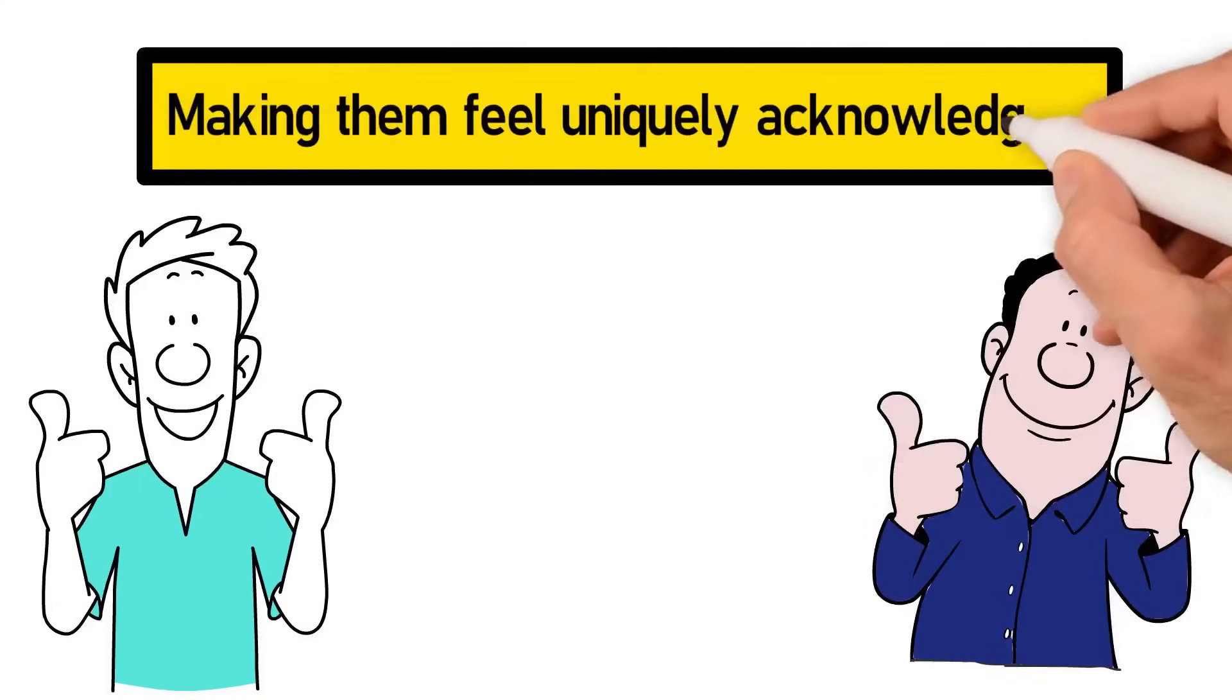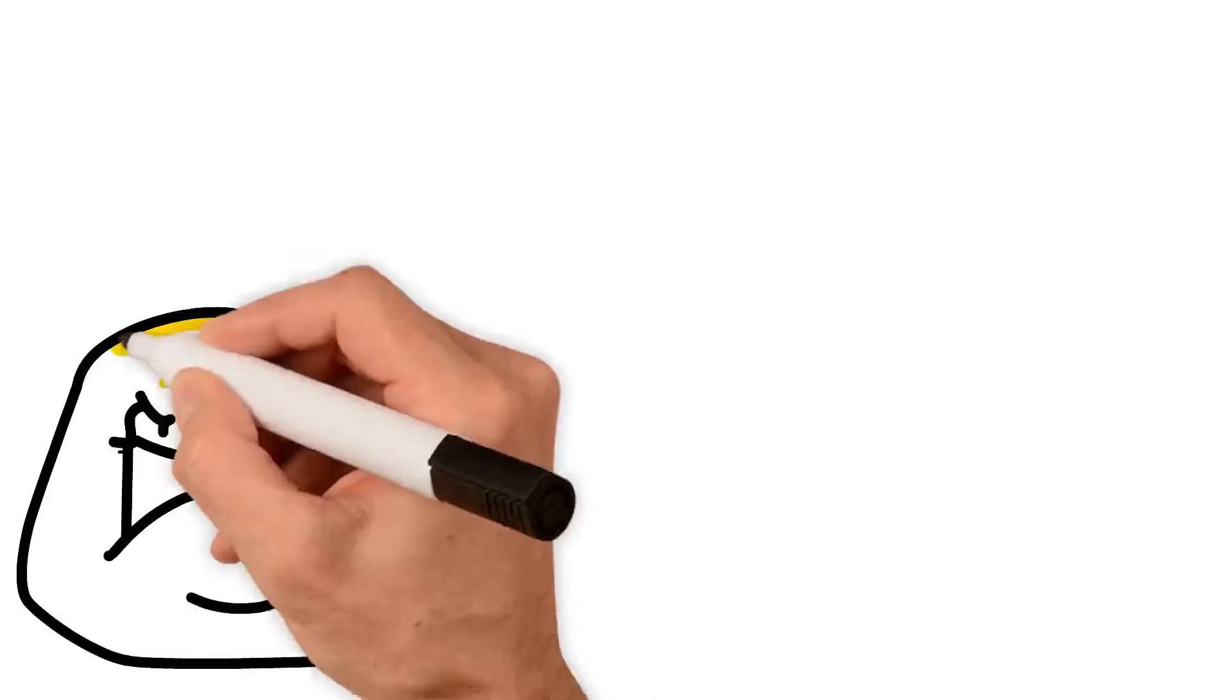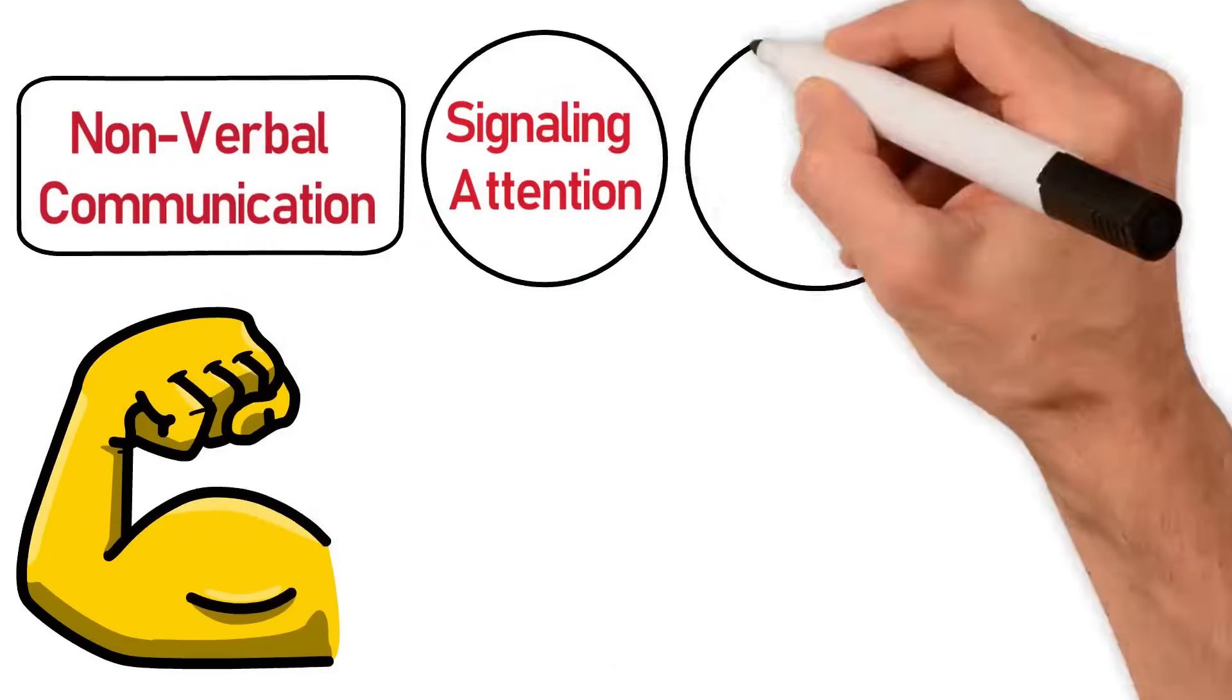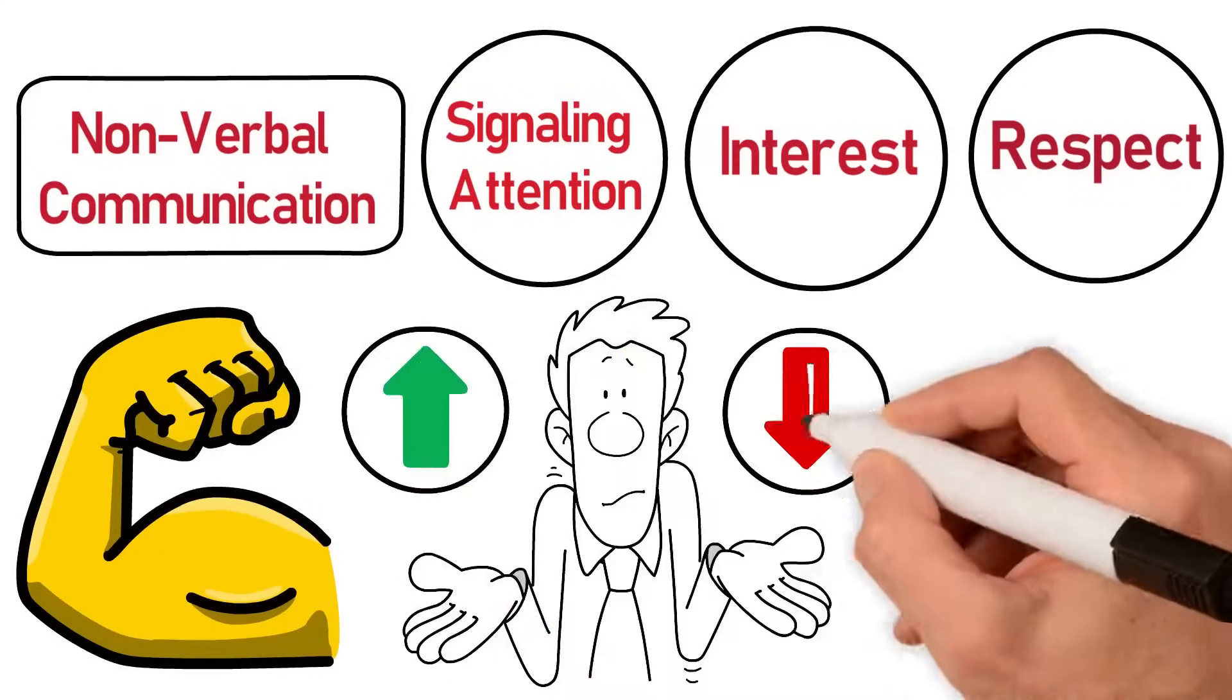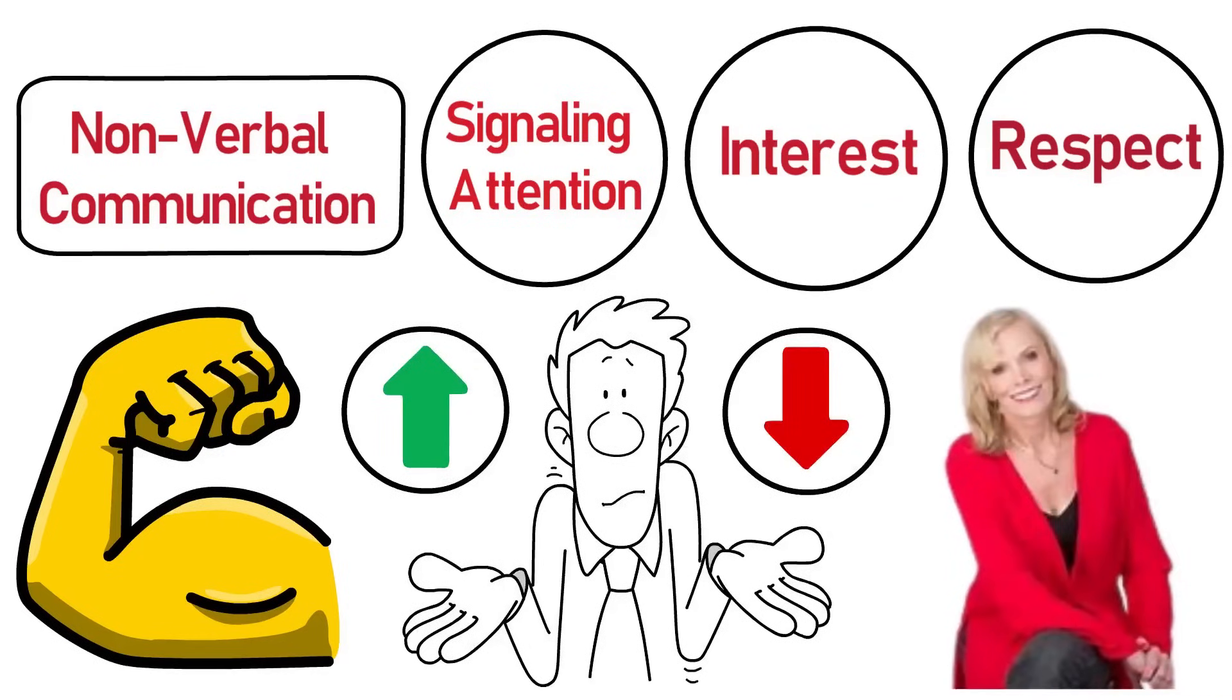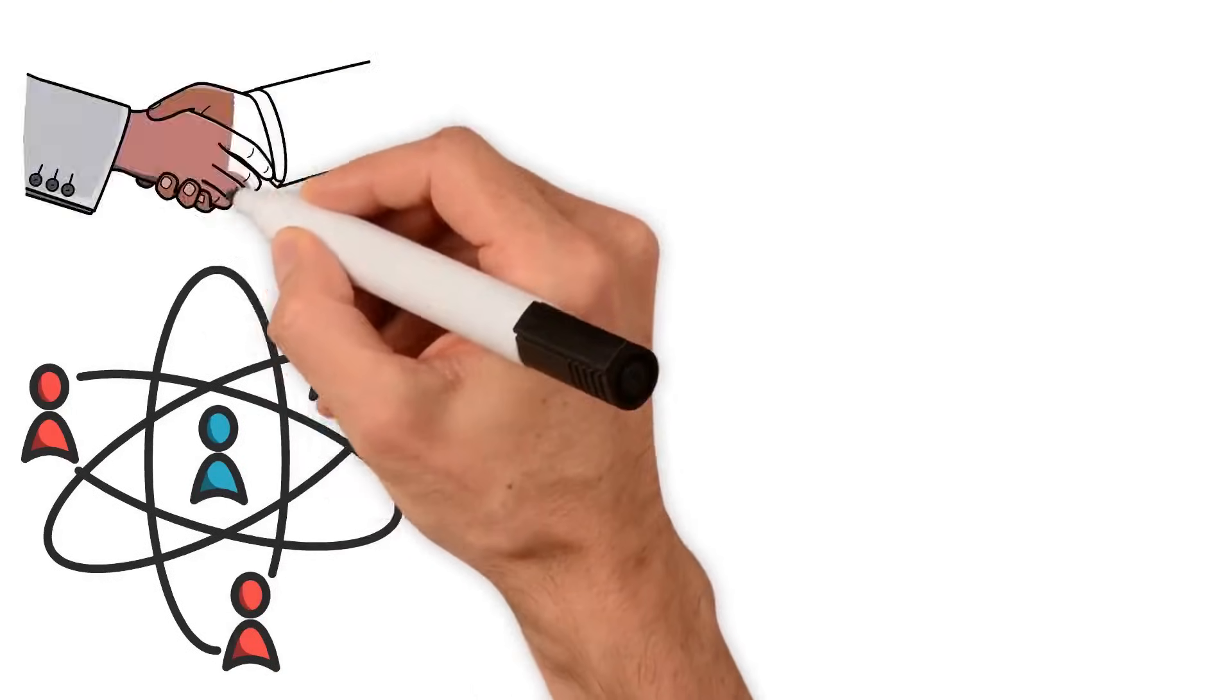Eye contact is another vital tool in our first impression toolkit. It's a powerful form of nonverbal communication, signaling attention, interest, and respect. But there's a fine balance to be struck. Too little can seem evasive. Too much can feel confrontational. Lowndes guides us to maintain a level of eye contact that is comfortable, yet confident, creating a connection without intimidation.